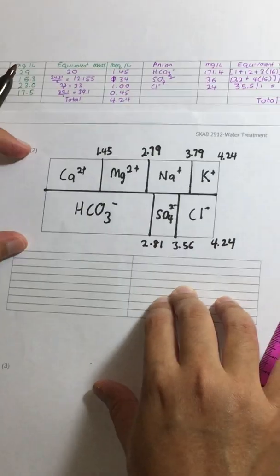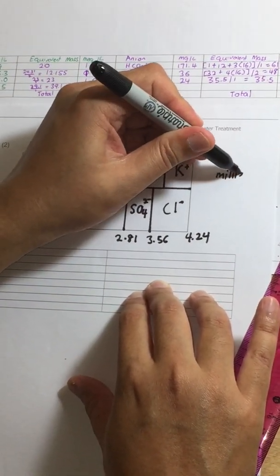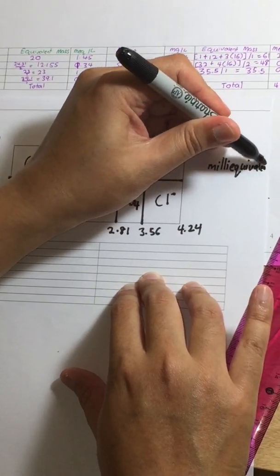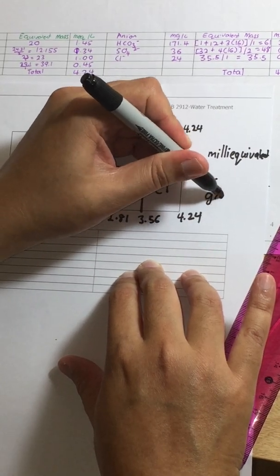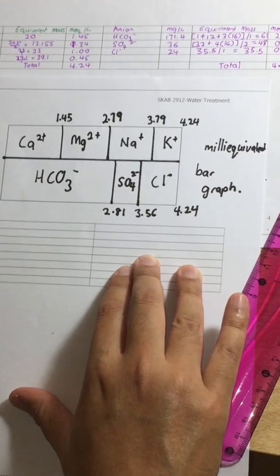Okay. So this diagram, we call it as milliequivalent graph. Thank you.